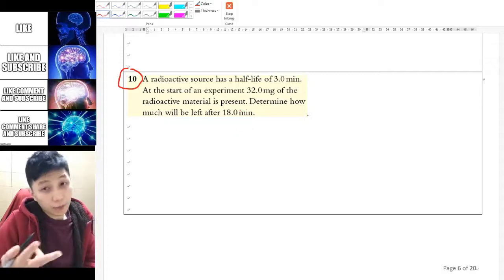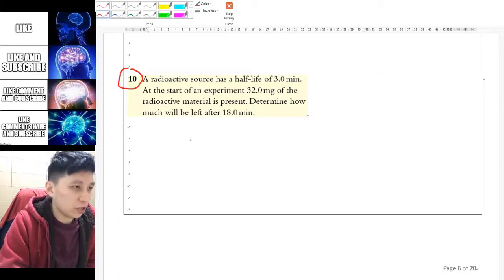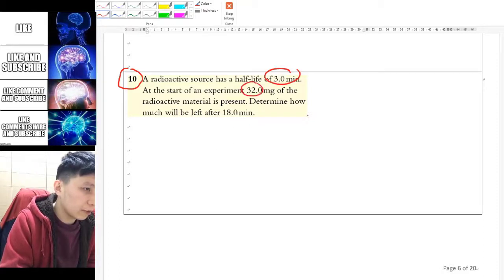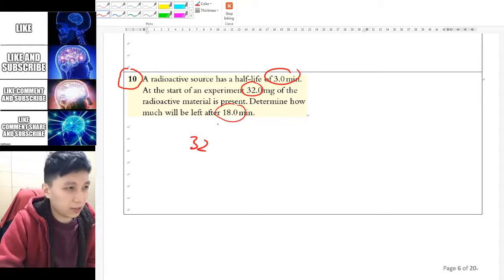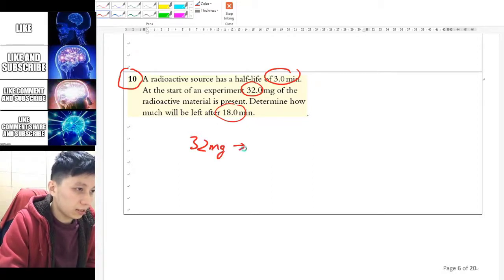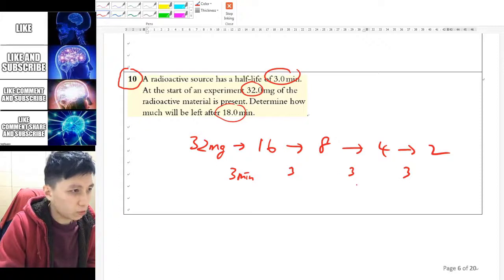Okay question 10. There are two approaches I can tell. The first one is less elegant but probably quite effective in general. So you know half-life is three minutes and it starts with 32 and how much will be left after 18 minutes. So you just have to count and try to draw this. If this is in an MC question then that's something you can do. 32 mg and then after one half-life, so three minutes become 16 and then become 8 and then become 4 and become 2. Right? Just draw a few and then this is three minutes.